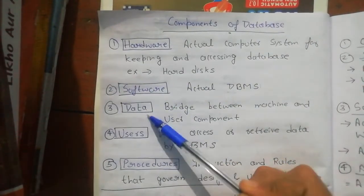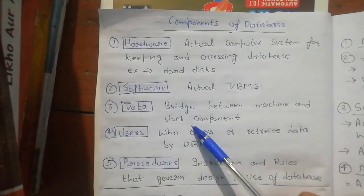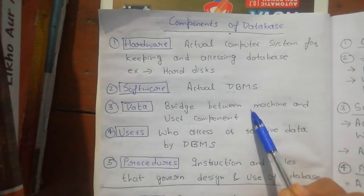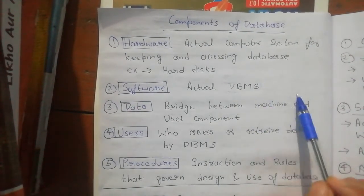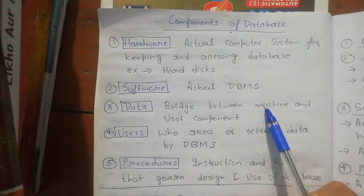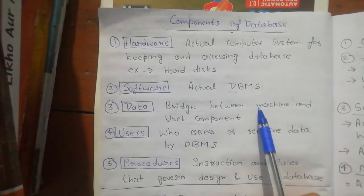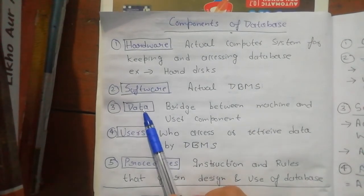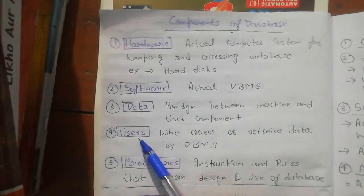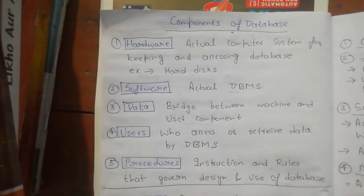What is data? Data is a bridge between the machine and the user component. So if we perform something on our machine, like SQL queries, and we are the user, then the bridge between us and that machine is the data. Users are all of us who access or modify the database in DBMS.